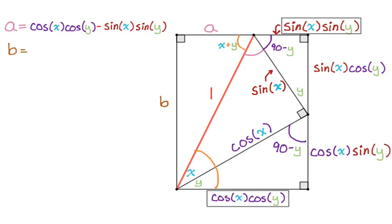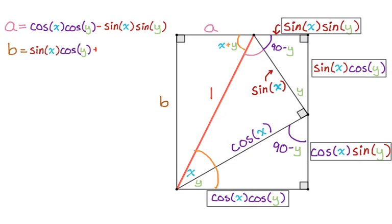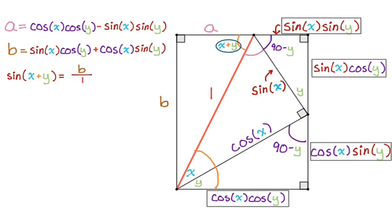The segment B is actually the entire vertical edge of the rectangle — that's the sum of the two parts. So B is sine x cosine y plus cosine x sine y. Looking at the triangle with angle x plus y: the sine of x plus y is opposite over hypotenuse, the side opposite is B over hypotenuse one. Cosine is adjacent over hypotenuse — adjacent is A, hypotenuse is one. So A over one.